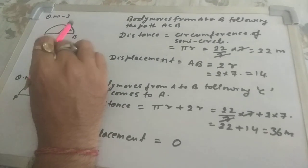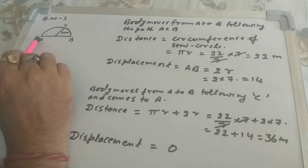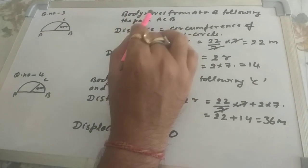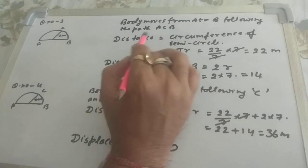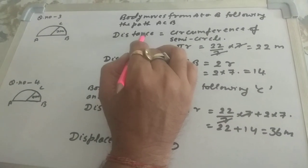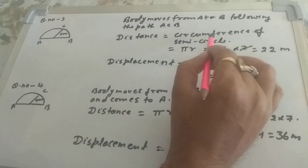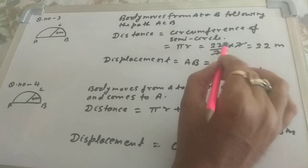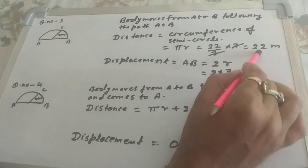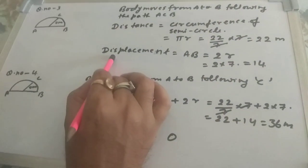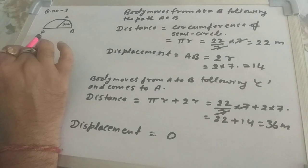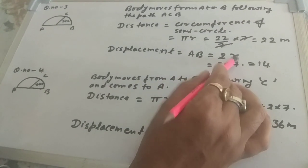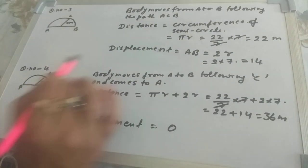Problem 3: a body moves on a semicircular path ACB with radius 7 meters, from A to B. The distance is the circumference of the semicircle, which is πr, so 22/7 multiplied by 7, giving 22 meters. The displacement is the length AB, which is the diameter. So AB equals 2 times the radius, which is 2 × 7 = 14 meters.